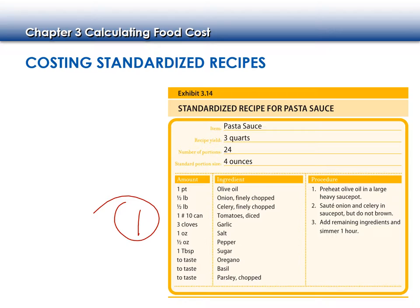Why is it important to know our portion size? So we can calculate our price per unit, so we don't waste it, and so we know how much to serve. If my portion size is 4 ounces, am I going to use an 8-ounce ladle? No — I'd use a 4-ounce ladle, or a 2-ounce ladle with two scoops. Using the appropriate serving tools also helps with that.